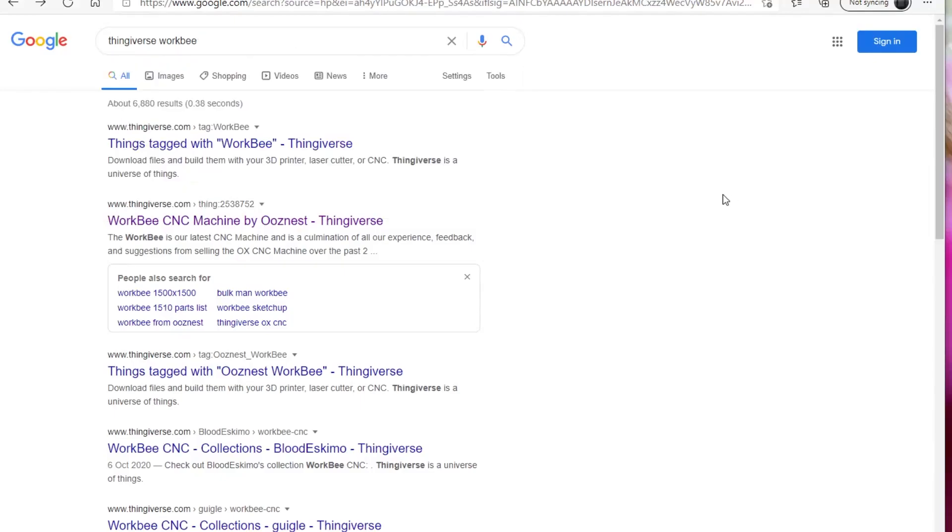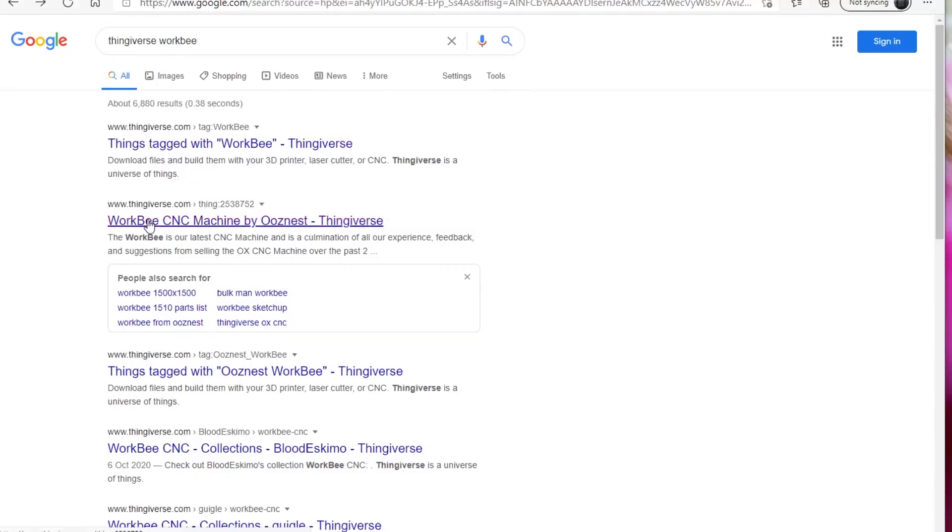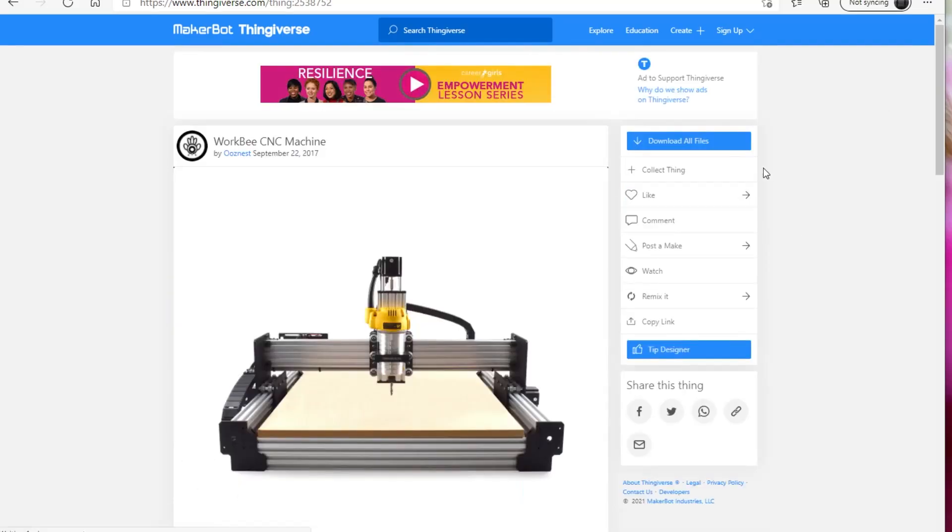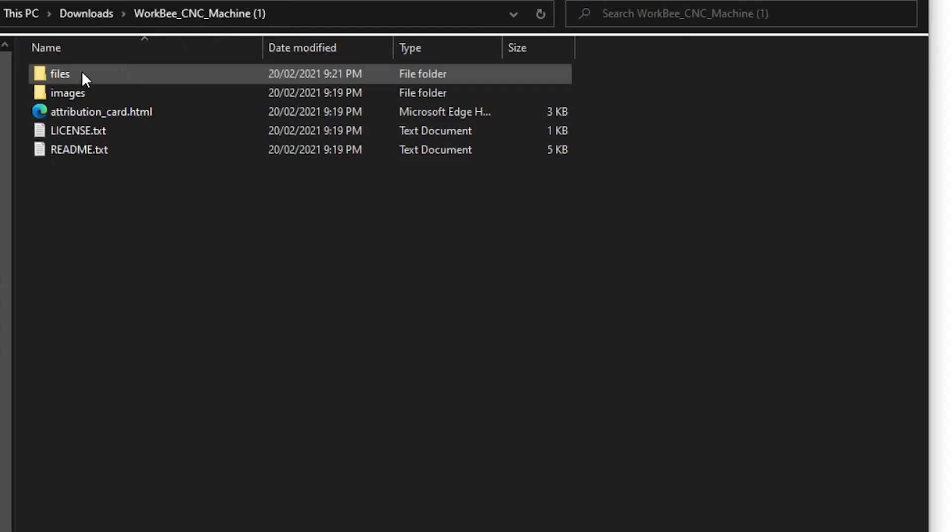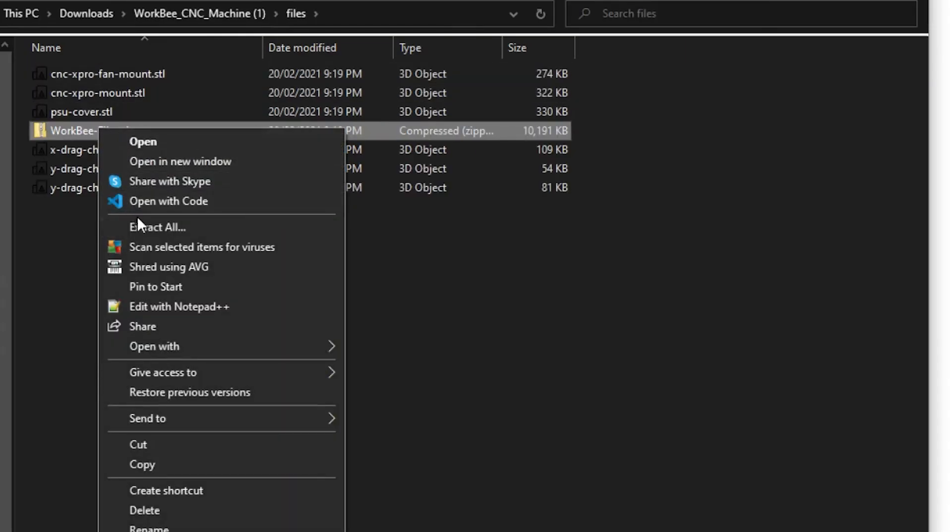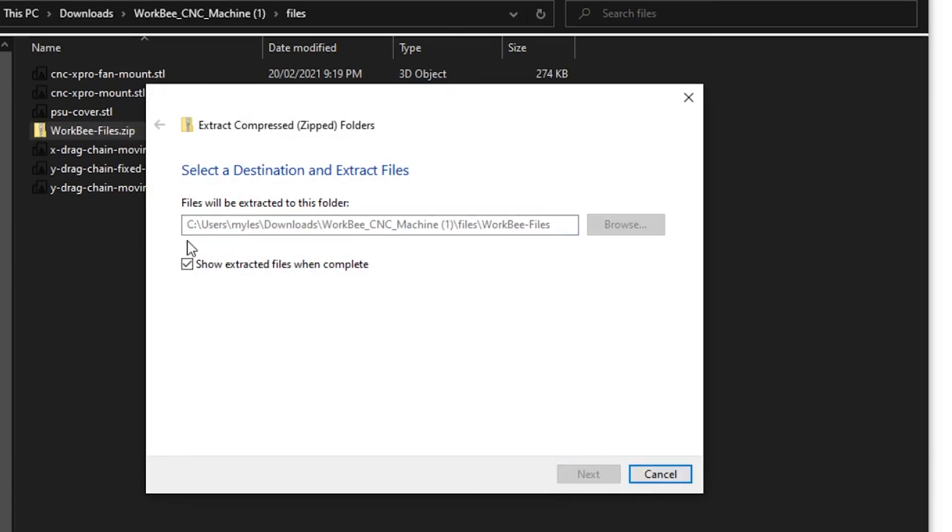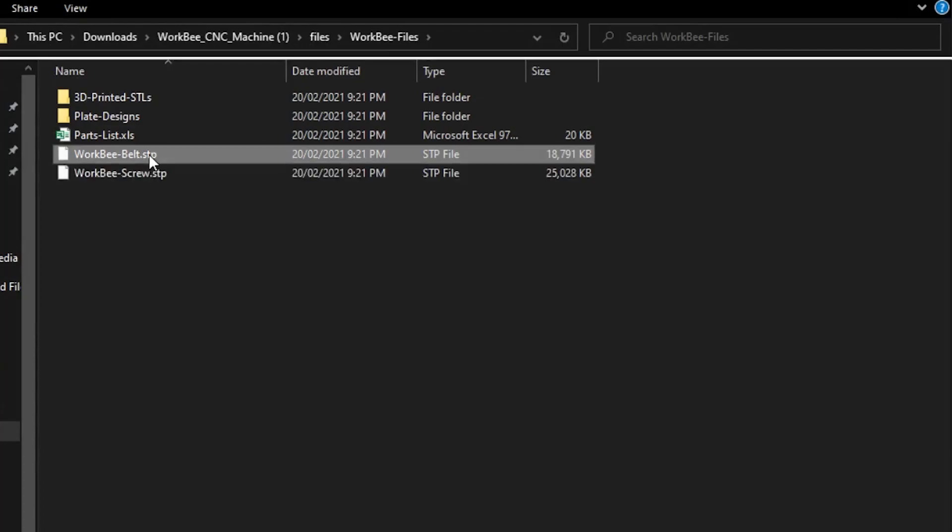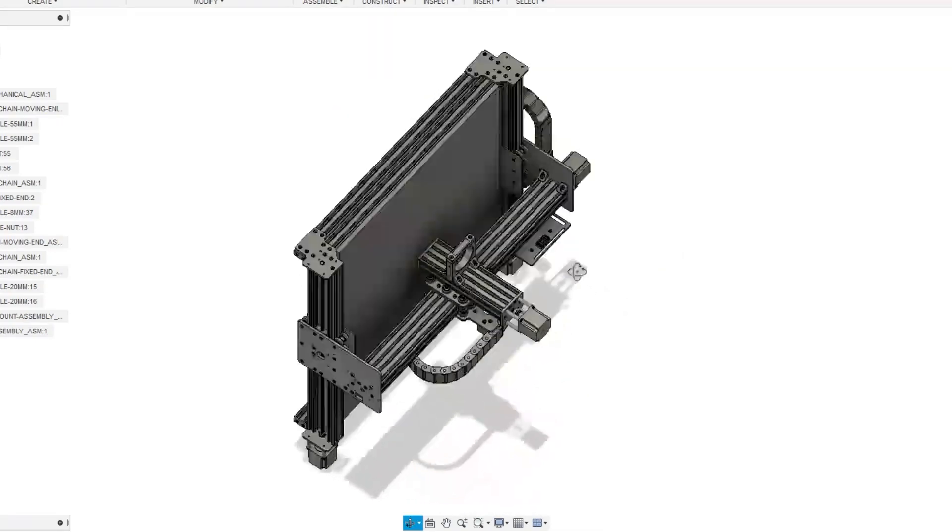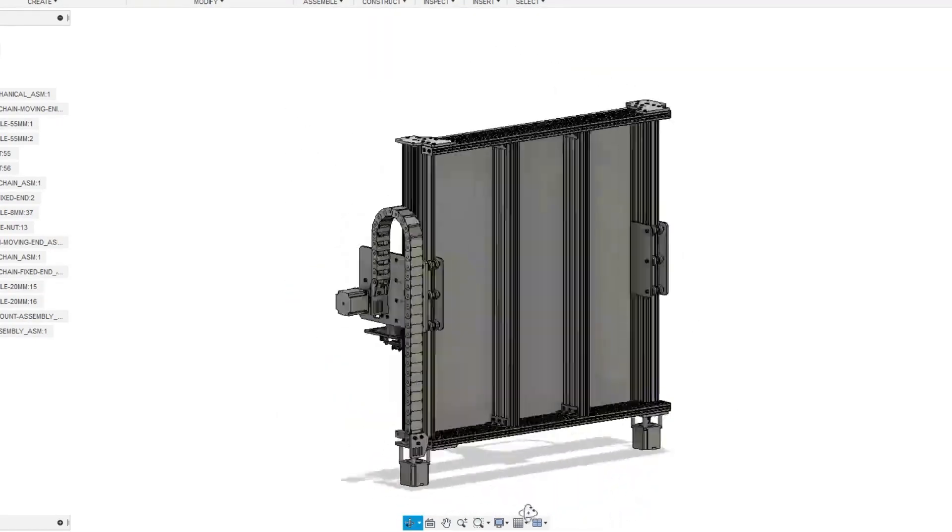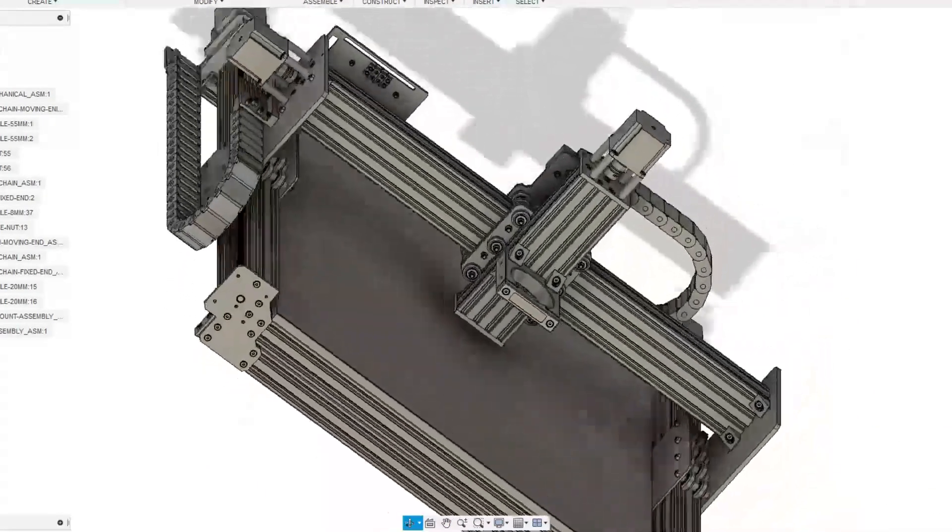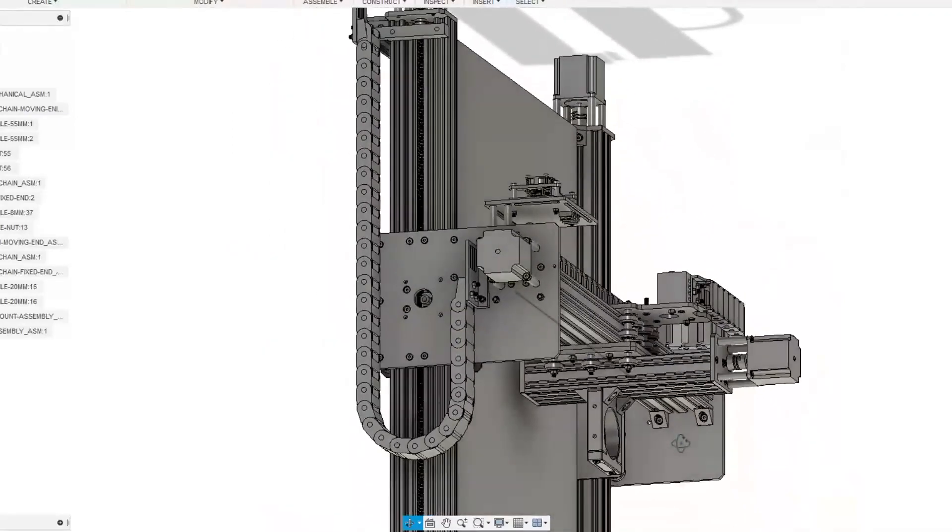One really cool thing is that Ooznest have actually uploaded the Workbee CNC as a 3D file to Thingiverse and they've also included the cable chain mounts and other mounts you might need for it. So if you download the file there's a folder in there called Workbee files. In that file, you can see there that it has a belt and a screw step file. Now this is fantastic because you can actually open it up in your chosen 3D program. Here I'm using Fusion 360 and you can look around the machine and check it out, see how it's pieced together, but it's also great to model from this 3D step file.